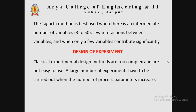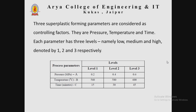The Taguchi method is best used when there is an intermediate number of variables — 3 to 50 — with few interactions between variables, and when only a few variables contribute significantly. Classical design of experiment methods are too complex and not easy to use, as a large number of experiments must be carried out when the number of process parameters increases.